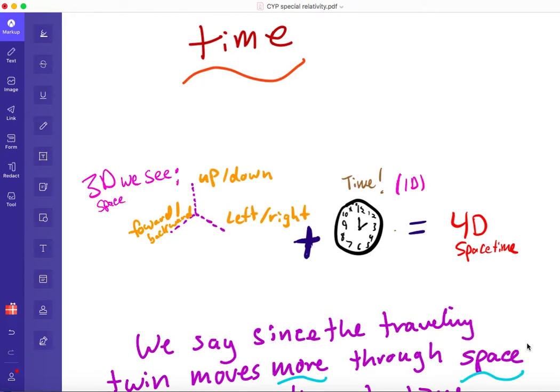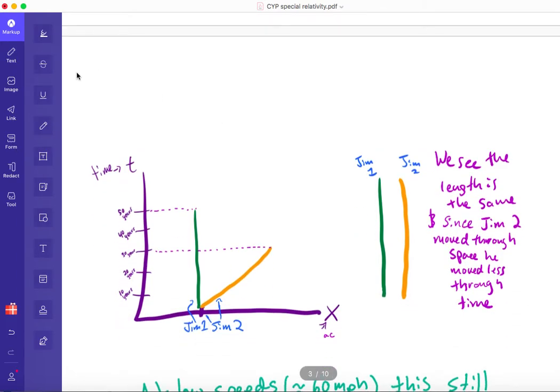So why does time being another dimension explain this? Well, I think it's best to start off with an analogy. Let's just say this is north, and this is east. We have two twins, Jim 1 and Jim 2. They both move five miles. However, Jim 1 moves five miles in the north direction, while Jim 2 moves five miles in the northeast direction. So Jim 1 moves five miles north, definitely, while Jim 2 moves less than five miles north, let's just say three miles north and four miles east. So now his motion gets shared between the north direction and the east direction.